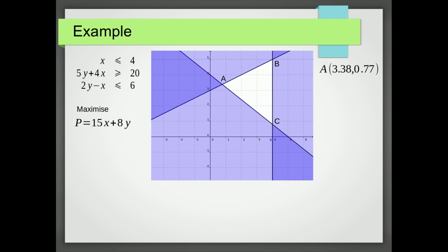and A is at 3.38 and 0.77, and we can find that by solving the simultaneous equations 5y plus 4x equals 20 and 2y minus x equals 6.